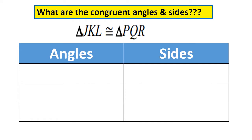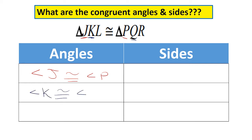Here we have a congruency statement with no image. From our congruency statement we can tell what angles are congruent. J and P are first, so angle J is congruent to angle P. K and Q are in the same position, so angle K is congruent to angle Q. Last, L and R — angle L is congruent to angle R. Those are three pairs of congruent angles.